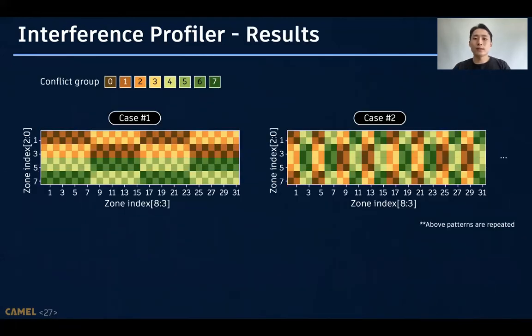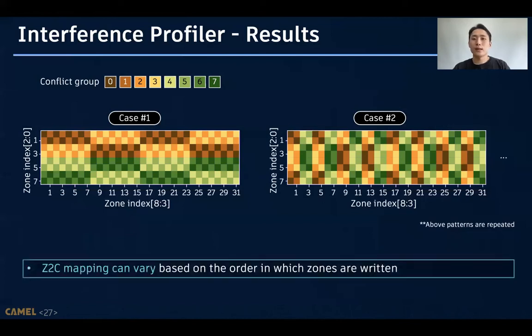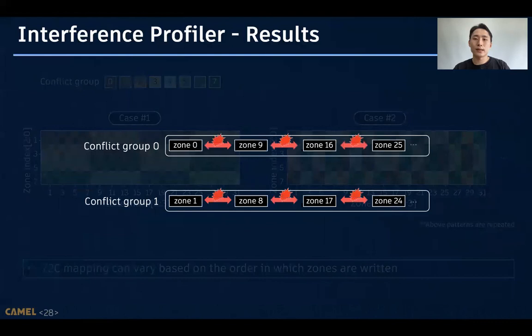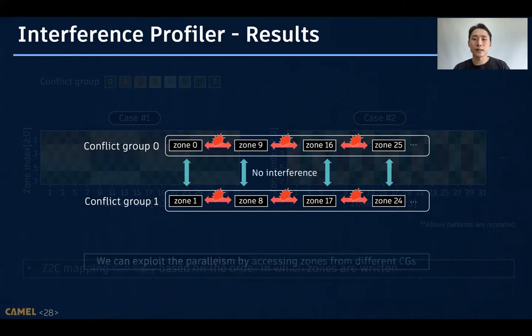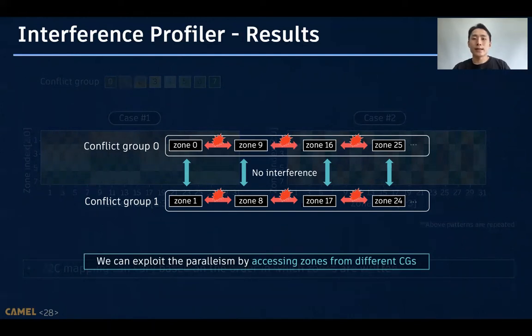And here are the profiling results when we have filled the zones in two different orders. We found that zone-to-conflict group mapping can vary based on the order in which zones are written. Note that two zones in the same conflict group always interfere with each other, and two zones from different conflict groups do not interfere with each other. So, based on the information about the conflict group, we can exploit parallelism by accessing zones from different conflict groups as much as possible. And it is the main idea of our scheduler.